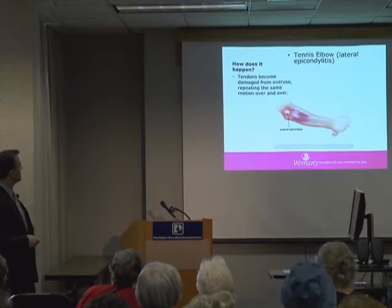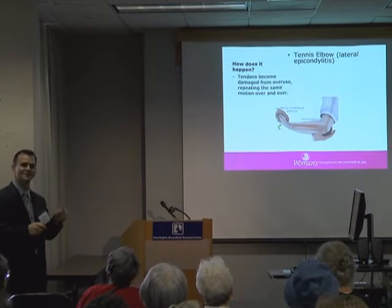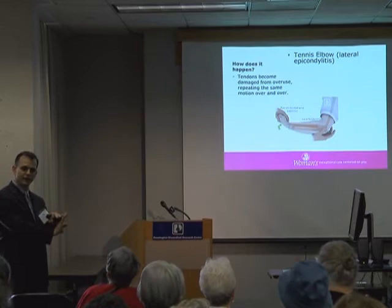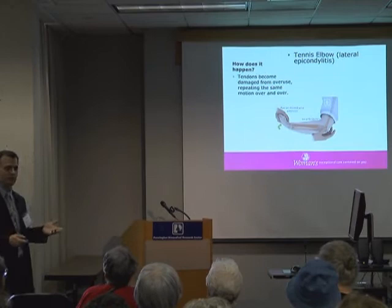How do we diagnose it? You come to the office and I'll press all around the elbow. Usually there's a lot of tenderness right at the lateral epicondyle. I'll also ask you to extend your wrist and then I'll try to break that extension — the resistance puts traction on the lateral epicondyle and causes pain there. That's how we diagnose it.